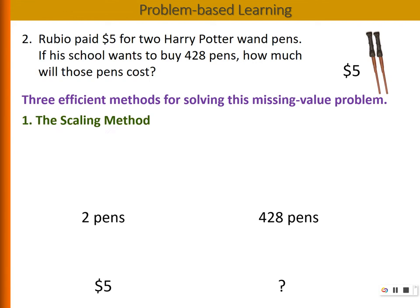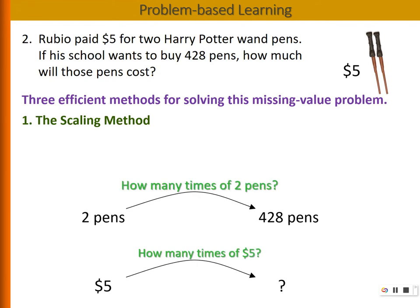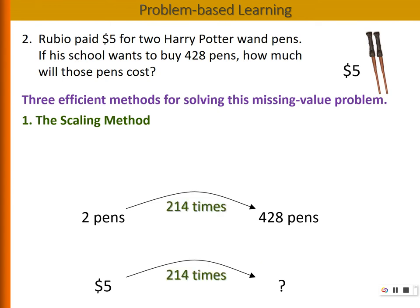The scaling method is to think, how to relate the two pens and the 428 pens. How could I scale up two pens to 428? Basically, how many times of two pens do I need? In fact, 214 times of two pens will give me 428 pens.